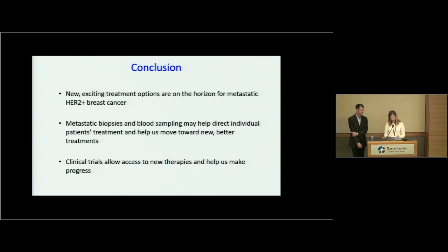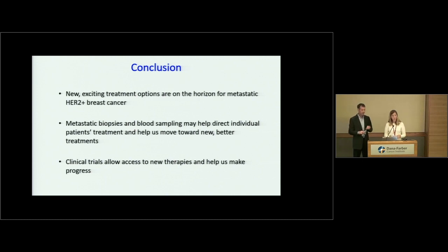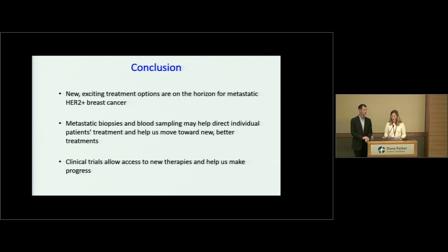Regarding HER2-positive inflammatory breast cancer: if somebody has cancer that is inflammatory but has spread to other parts of the body, our treatment options are very similar or the same as what we would use in non-inflammatory metastatic breast cancer. On the number of patients in clinical trials — this varies significantly from about 20 patients up to thousands, depending on the question being asked and how many patients are needed to effectively answer it. You can easily ask your treatment team about the size of any trial you're considering.